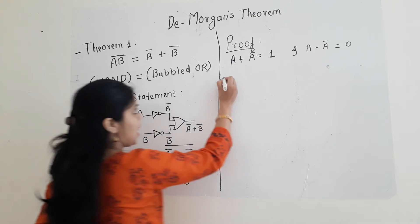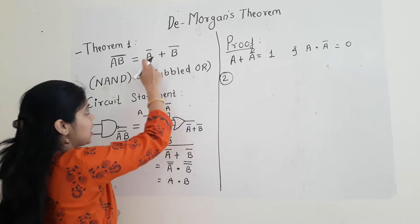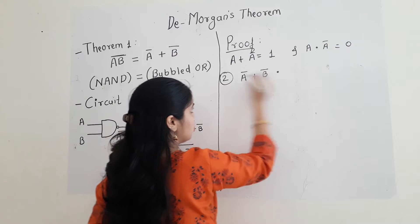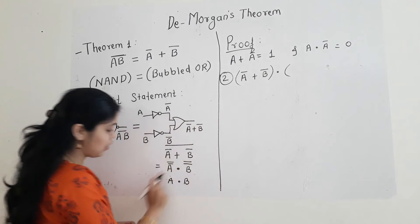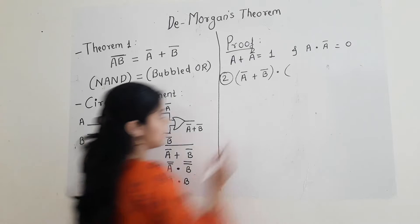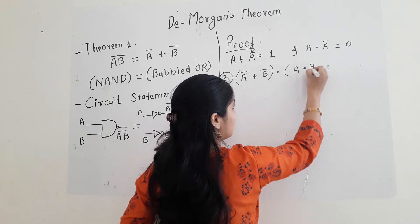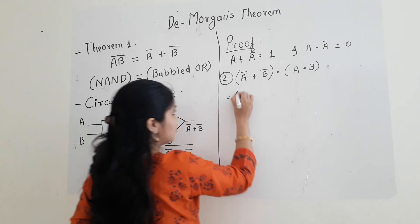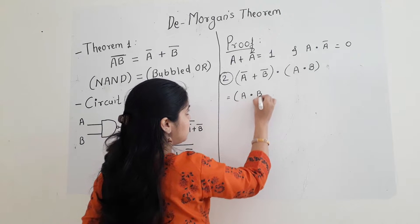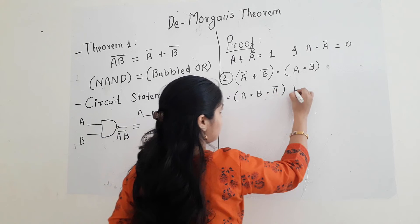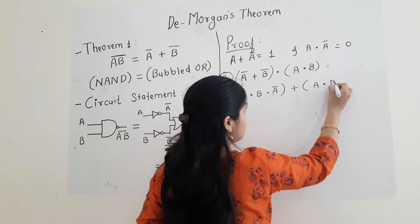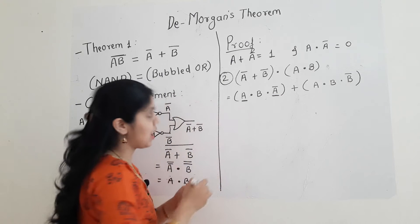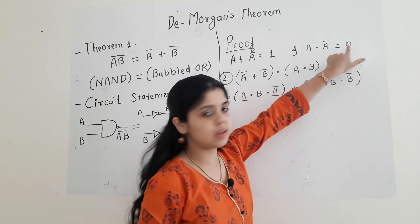For the second complement theorem, again I am considering my A as my RHS. A bar plus B bar is my A, and the second A bar I have already calculated as A dot B, so I am taking it directly as A dot B. Again by using the distributive law, I will be opening my brackets, which gives me A dot B dot A bar plus A dot B dot B bar. If you observe, A dot A bar — as per the law A dot A bar gives me 0.